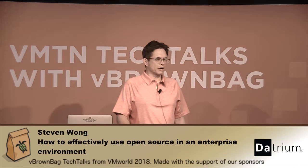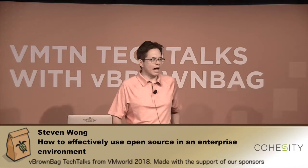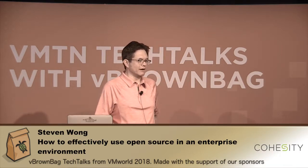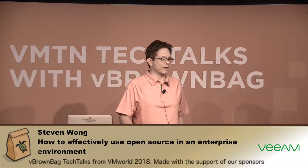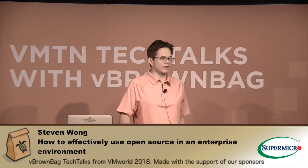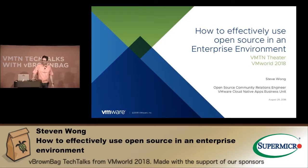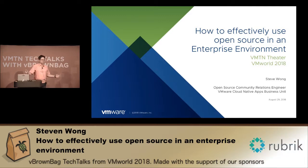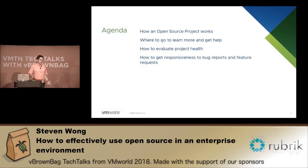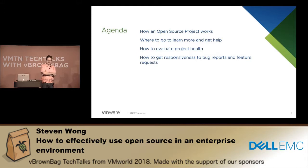Hi everybody. I'm going to talk today about how to effectively use open source software in an enterprise environment. I'm Steve Wong, a software engineer employed by VMware, but I've been working on the Kubernetes open source project since 2015. I've also been a contributor to the Apache Mesos project, so I'm assigned to actually work on the open source bits. You might think this is simple — that using open source software just entails downloading it and using it — but I'm going to explain how an open source project actually works behind the curtains: how that software gets developed, tested, and distributed.